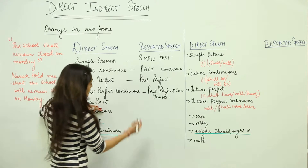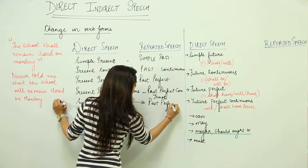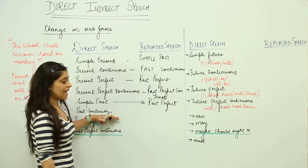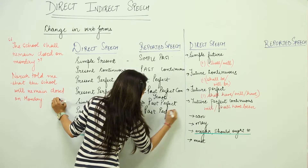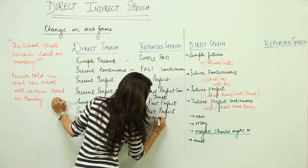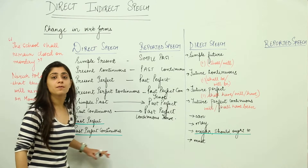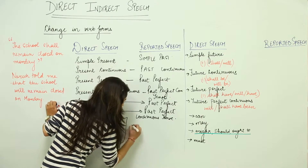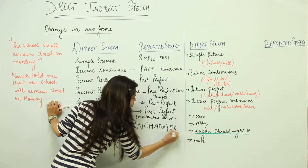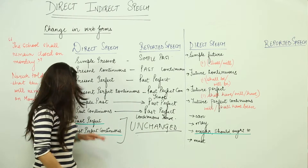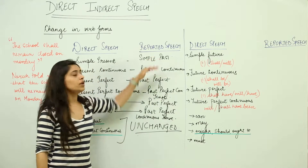Simple past will get converted into past perfect again. Past continuous will get converted to past perfect continuous tense. Past perfect and past perfect continuous tense remain unchanged. So if you find a direct speech in past perfect or past perfect continuous tense, it remains entirely unchanged for the reported speech.